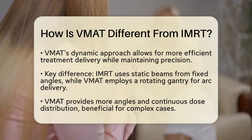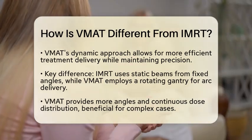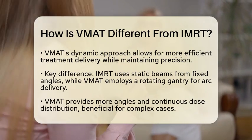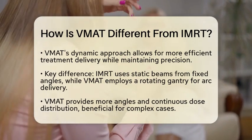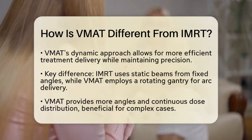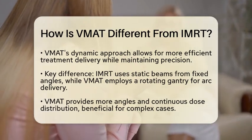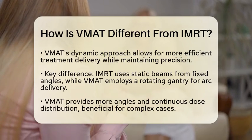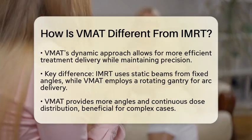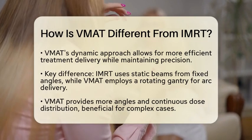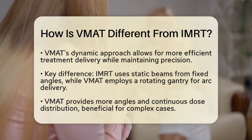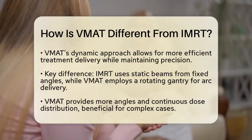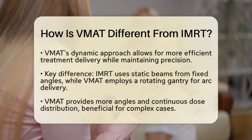One of the key differences between the two techniques is how the beams are delivered. IEMRT relies on multiple static beams from fixed angles, while VMAT employs a rotating gantry that delivers radiation in arcs. This means VMAT can provide more angles and a more continuous dose distribution, which can be beneficial for complex cases.